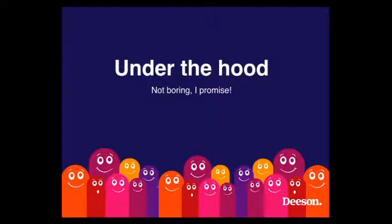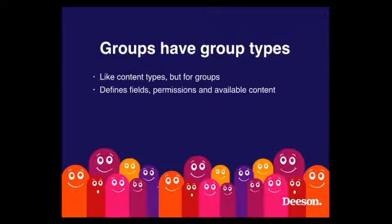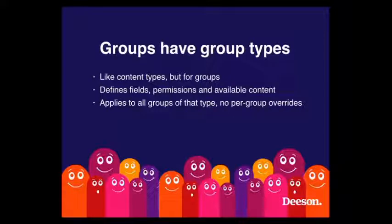Let's have a look under the hood. Groups have group types, and group types are like content types for nodes, but for groups — that's the easiest way to explain it. Just as content types allow you to field nodes of a specific type, group has the same thing. You can have different group types with different fields, but they can also have different permissions and available content. This means you can have a whole rule set for one type of group and a different rule set for another. There are no per-group overrides — it's one set of rules you define as a site builder, which gives you the guarantee that everything will work the way you intended, because no user can accidentally break stuff.